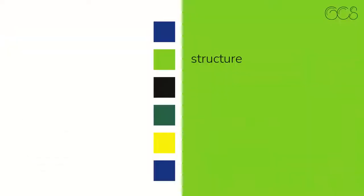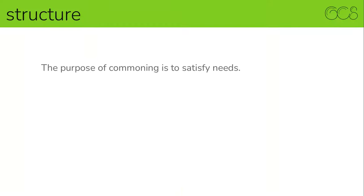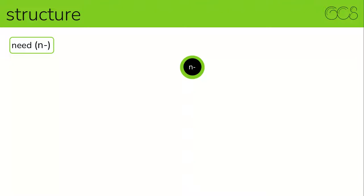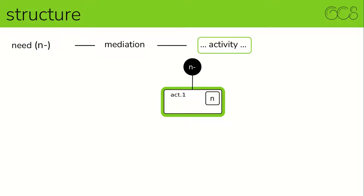Which brings us to the structure. The purpose of commoning is always to satisfy needs. What follows is the structure from a need to its satisfaction and all activities in between that are necessary or become necessary for it. A need can be understood as a problem that needs to be solved. So we have an unsatisfied need — N minus. The need is mediated; it is not about needs that can be satisfied by themselves. For need satisfaction, the support of others is necessary, and then an activity must take place which can finally satisfy the need. This is the shortest course from a need to its satisfaction.